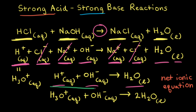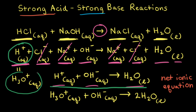This is one way of writing the net ionic equation. However, remember that H⁺ and H₃O⁺ are used interchangeably in chemistry. So instead of writing H⁺, we could write H₃O⁺. When the hydronium ion reacts with the hydroxide anion, we still form water. But for this version of the net ionic equation, we need to put a 2 as a coefficient to balance everything.